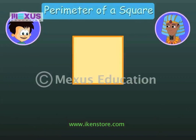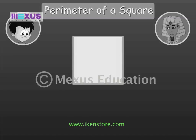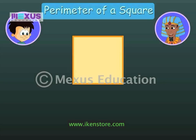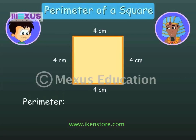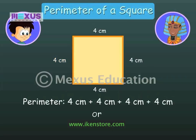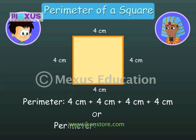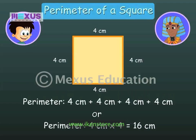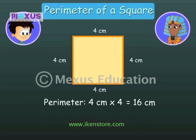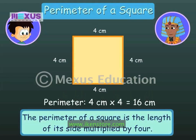Let's find out how to measure the perimeter of various shapes. How do you find out the perimeter of a square, Horace? A square has four equal sides. To find out the perimeter of a square, all you need to do is add the length of its sides together. This square has sides of length four centimeters each. The perimeter of this square is four plus four plus four plus four centimeters, or four centimeters multiplied by four. Four multiplied by four is sixteen. The perimeter of this square is sixteen centimeters. The perimeter of a square is the length of its side multiplied by four.